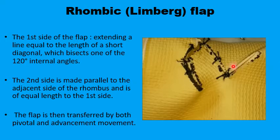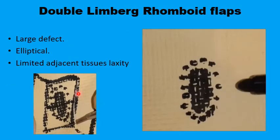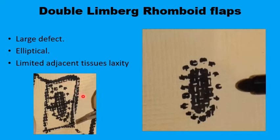The primary defect is now closed by the rhomboid flap, and the secondary defect where the flap was raised from is closed by primary sutures. If you have a large lesion, or if one side is much longer than the other — resulting in an elliptical or oblong shape rather than a circle — you can use two Lindbergh flaps. Draw a parallelogram around the lesion with a width-to-length ratio of one to two, divide this parallelogram into two equal-sided rhomboids, and place flaps on either side to fill the defect.